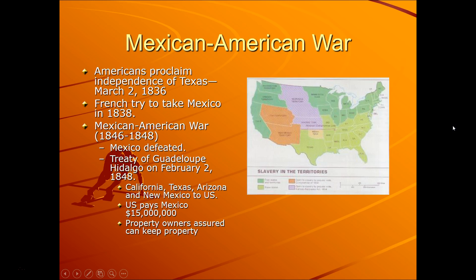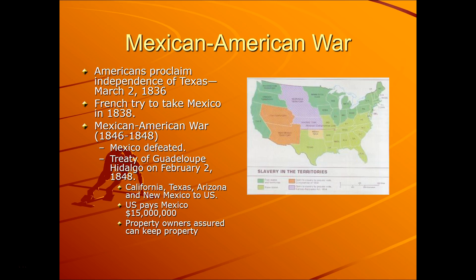Then the Mexican-American War. If you ask yourself how did America become America — we started with 13 colonies in 1776, Manifest Destiny, and people moving west. But this portion of the country, the southwest, was formerly Mexican. America seized this land. In 1836, Americans proclaimed the independence of Texas. The French attempted to take Mexico in 1838. America fought the Mexicans from 1846 to 1848. Mexico was defeated. The Treaty of Guadalupe-Hidalgo in 1848 gave America California, Texas, Arizona, and New Mexico. The U.S. paid Mexico $15 million, and property owners were assured they could keep their property. This is not the revolution yet, but it's a contributing factor which eventually led to revolution.